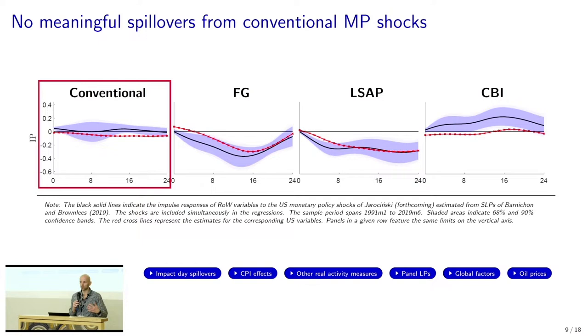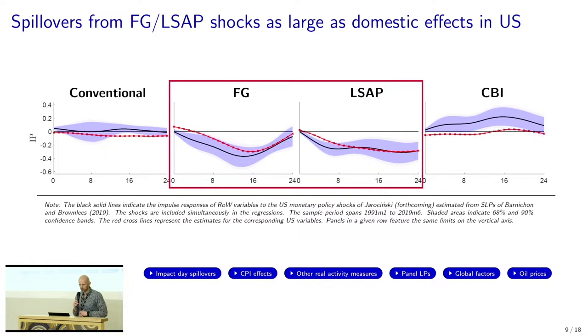Remember, this is a shock to the current policy rate for given forward guidance — for given expected path of the policy rate. The second observation is that forward guidance shocks and LSAP shocks have large effects in the rest of the world, whereby large means effects equally large as in the US itself. This observation is not really new — a lot of empirical work documents that Fed spillovers are really very large, of similar size as the domestic effects in the US. Here we show this is the case both for forward guidance and LSAPs.